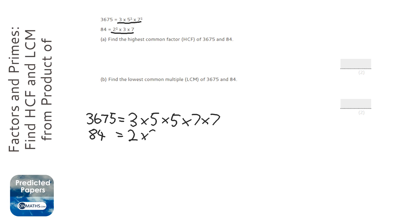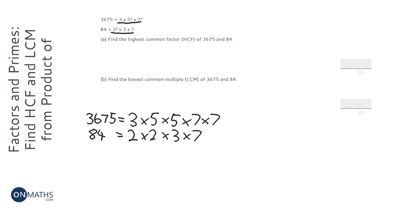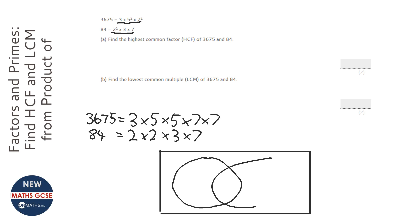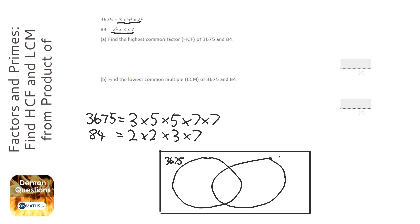So 2 times 2 times 3 times 7. Let's construct a Venn diagram. I'm not very good at drawing circles, but I'm going to try my best and make the circles as big as possible. We've got 3,675 — just labelling which circle is which — and this is 84. To do the Venn diagram, we're just going to go through the numbers and write out which ones overlap and which ones don't.